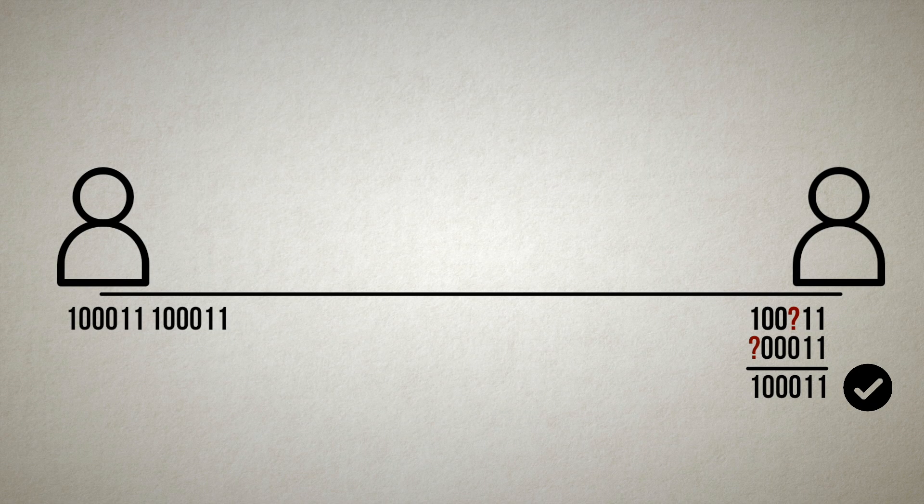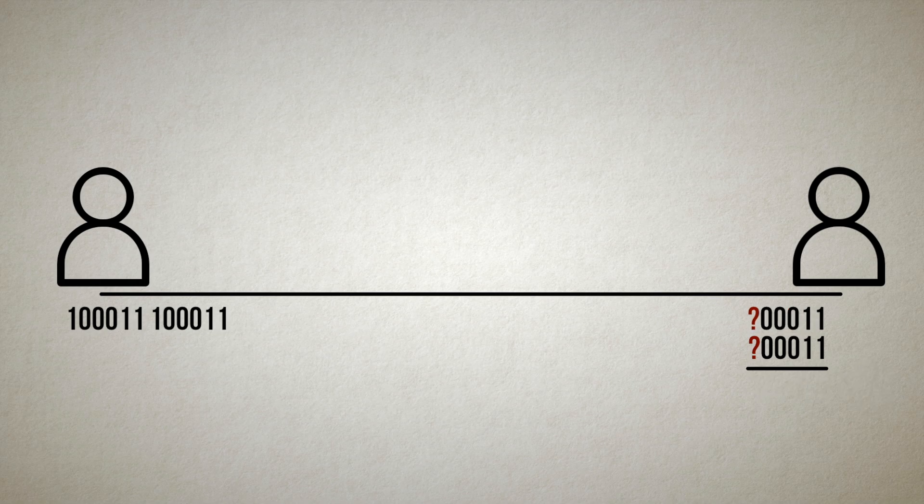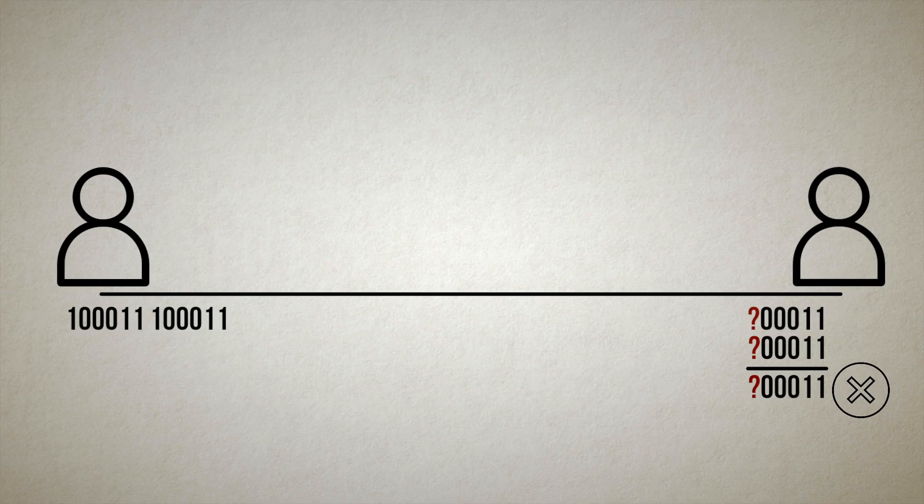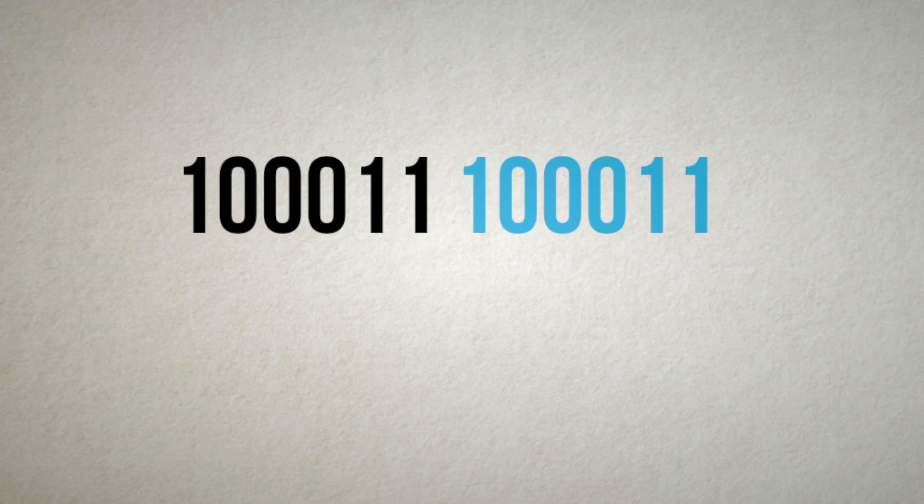Unfortunately, simple repetition fails whenever the same bit is erased in both copies. And because this is quite common, this strategy leaves us very vulnerable to failure. Also, it doubles the message length no matter the number of erasures.